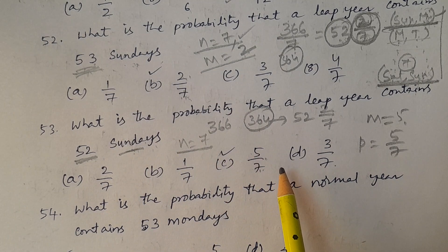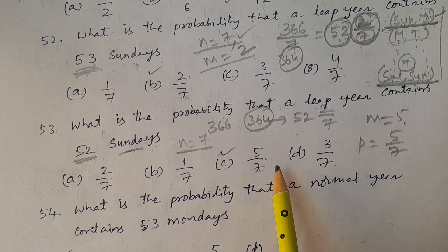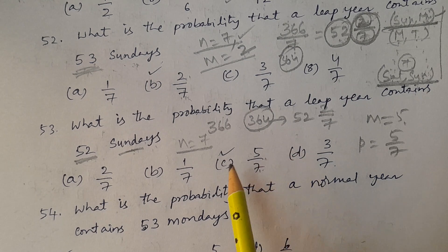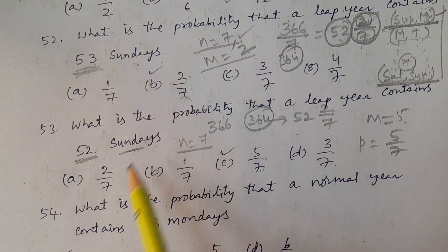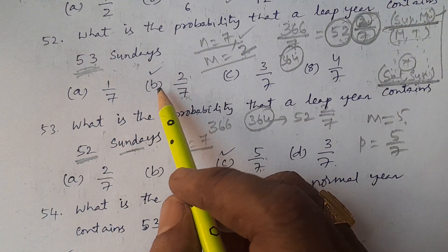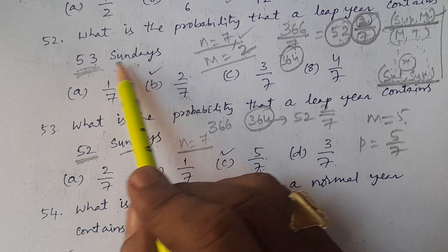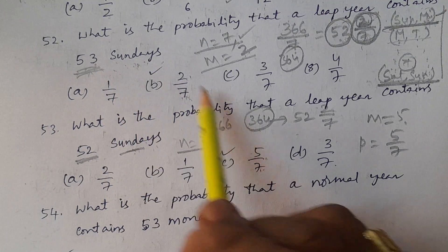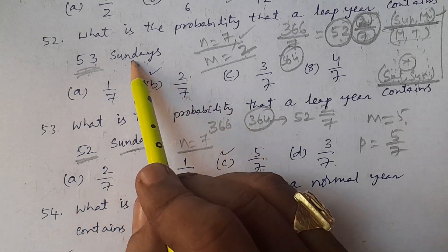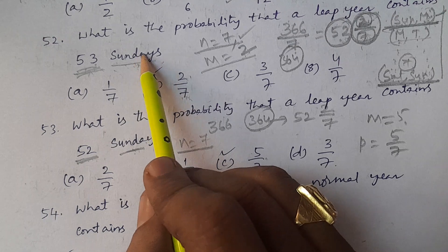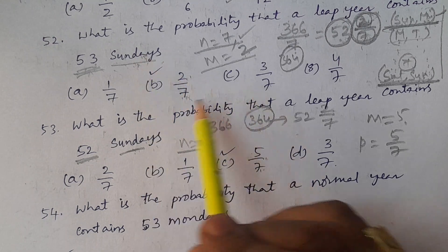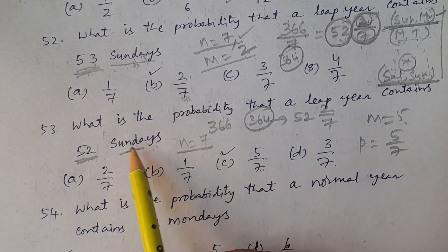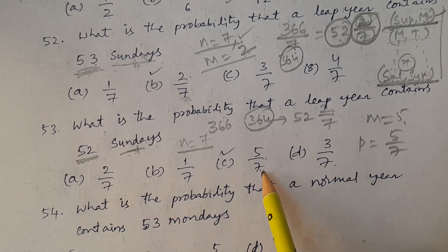An important point: this same logic applies for 53 Mondays, 53 Tuesdays, or any other day of the week. The answer is always 2/7 for 53 occurrences and 5/7 for 52 occurrences in a leap year, regardless of which day is mentioned.